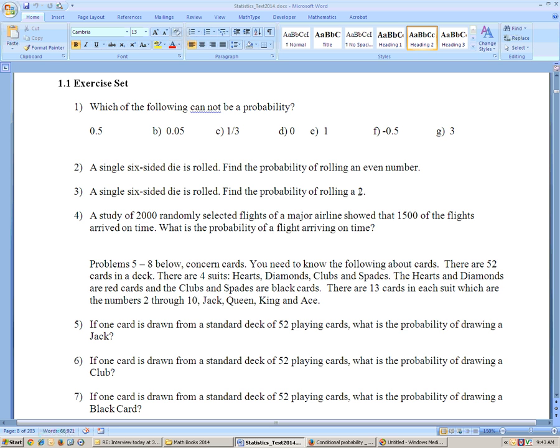Find the probability of rolling a 2. Well, that would be 1 out of 6. This one here, there's 2,000 randomly selected flights. 1,500 of the flights arrive on time. Find the probability that arrives on time. Well, that would be 1,500 out of 2,000. That actually reduces down to 3 fourths or 75% chance.